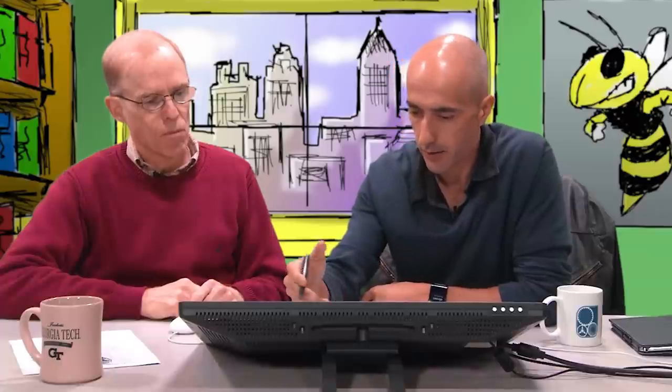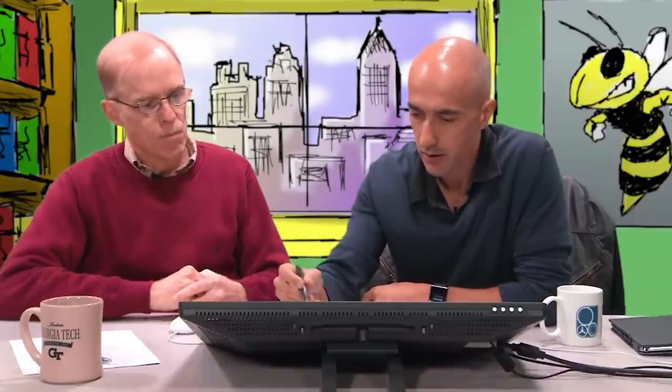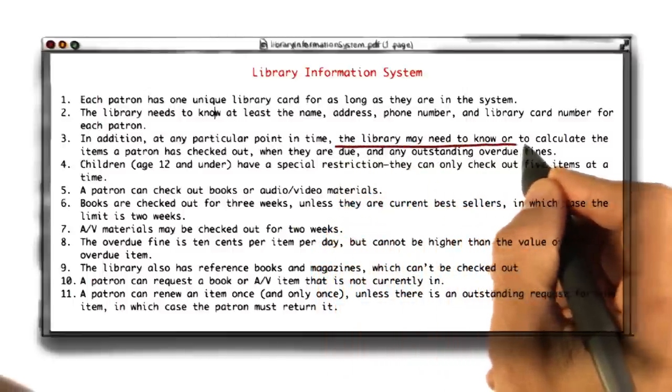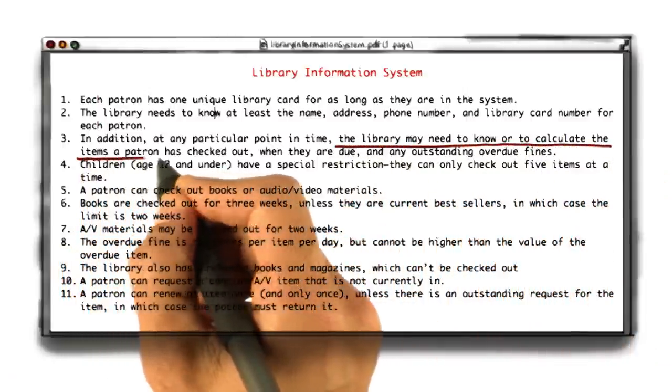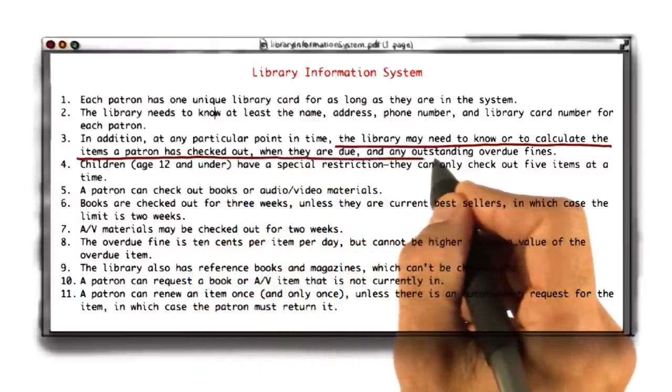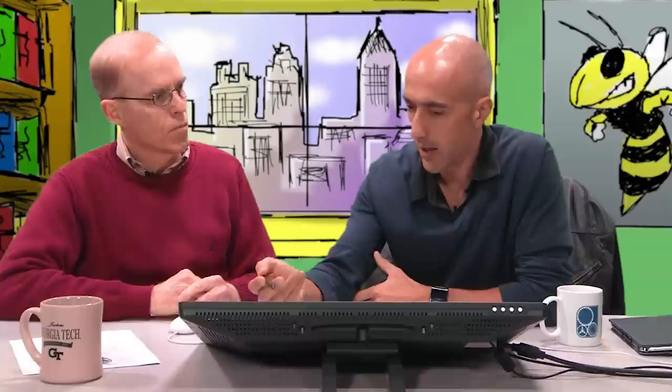So, the ones that I've identified, I've underlined here, actually I've underlined complete sentences so that we can look at the verbs in context. And the first one is this sentence that says that the library might need to know or to calculate the items a patron has checked out, when they're due, and any outstanding overdue fines. So I would imagine that this is representing a situation in which you bring up a patron's record and you start looking up this information. The patron often wants to know what they have currently checked out or when they're due or how much they're owed.